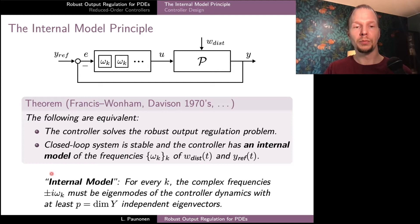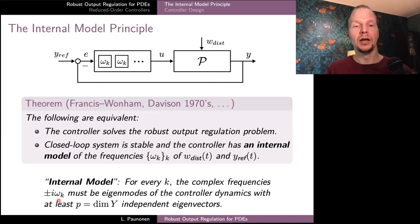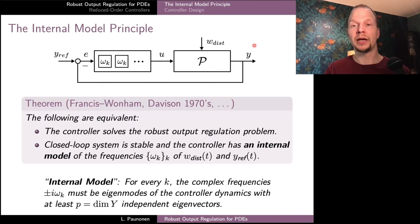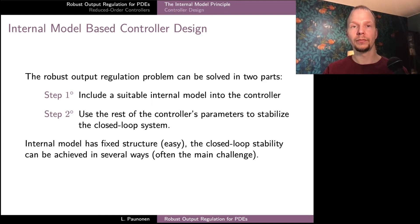The internal model can be formulated in several ways, but roughly stated it means that for each frequency in our reference and disturbance signals there should correspond an eigenmode in the controller dynamics, and the multiplicity of this eigenmode should equal at least the number of independent outputs of our system — simply the length of the measurement vector y.